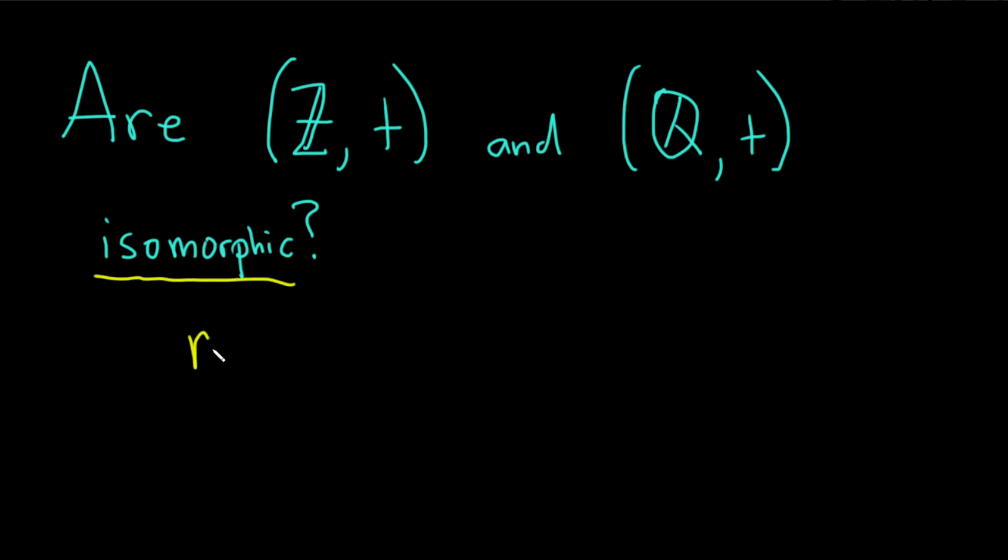So the answer is no, they are not isomorphic. And we could say since ℤ under addition is cyclic, it has 1 and negative 1 as generators,